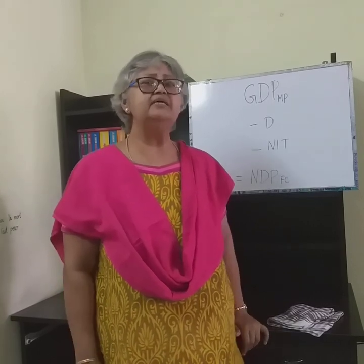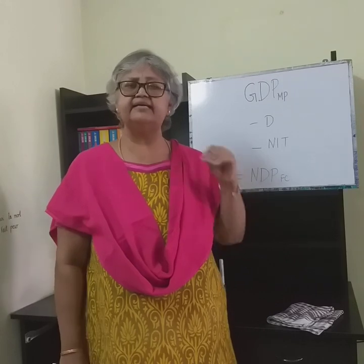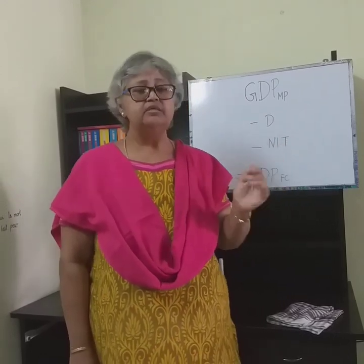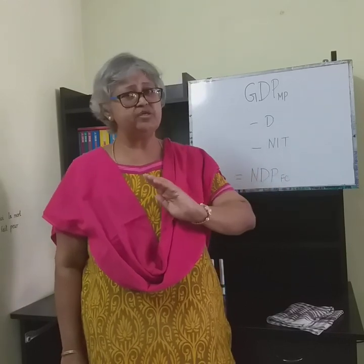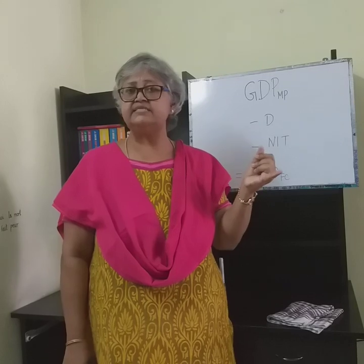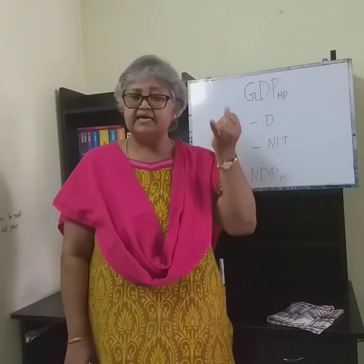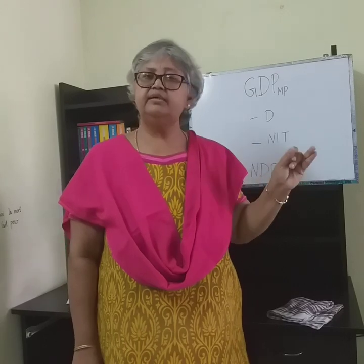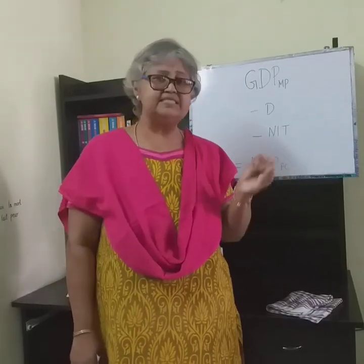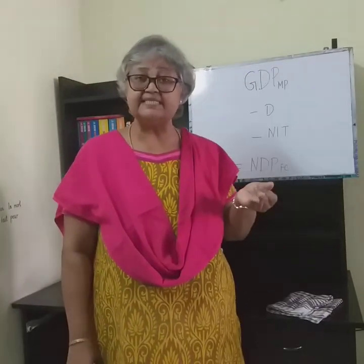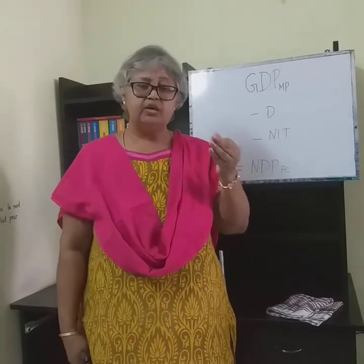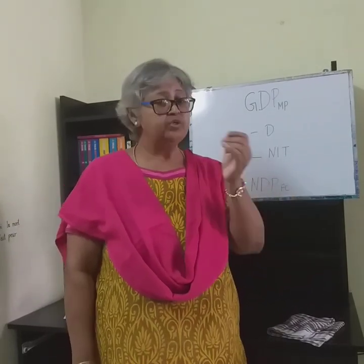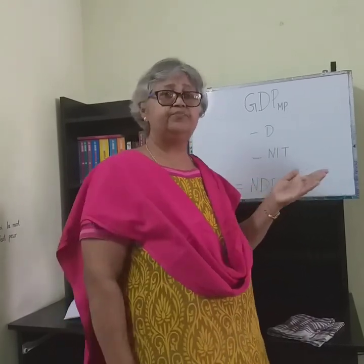Whereas national income is the income made by normal residents from within the domestic territory and from abroad, so that very much includes the net factor income from abroad. So those are the three points of differences between domestic income and national income. Number one: domestic income is a territorial concept whereas national income is a national concept. Number two: domestic income considers all the production units within the domestic territory, and national income considers the income made by the normal residents of the nation. Number three: domestic income does not include NFIA and national income includes NFIA.